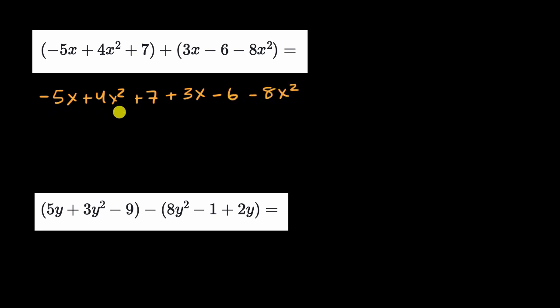Now the key is we want to combine like terms. What do I mean by like terms? The ones that are the same degree. So for example, here I have four x squareds, and then I am subtracting eight x squareds. So if I have four of something, and if I subtract eight of that same something, I am now going to have negative four of that something.